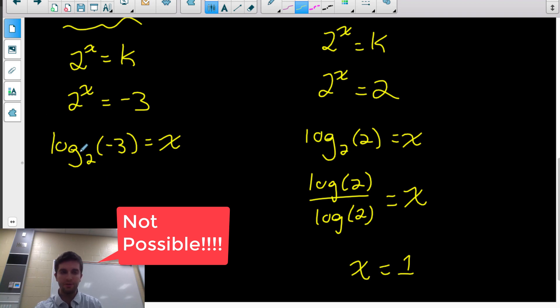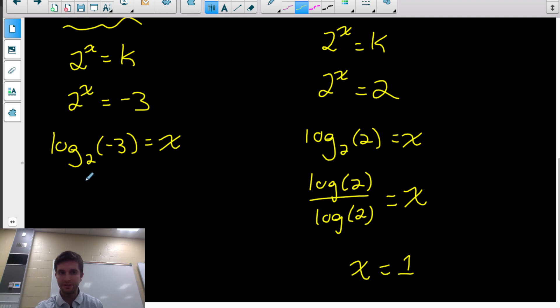There's no exponent you can put on 2 to make it negative, so there is no answer to this. Logarithms are undefined for negative arguments. So for this one, no solution.